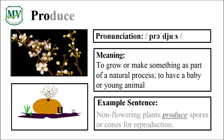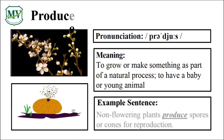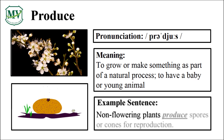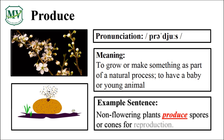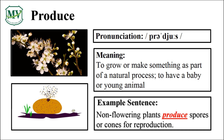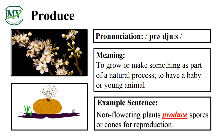P-R-O-D-U-C-E. Produce. Great! Non-flowering plants produce spores or cones for reproduction. Can you try reading the sentence on your own? Great!